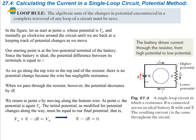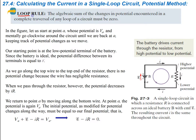Here's one of our loop rules — the potential method. The first one is: the algebraic sum of the changes in potential encountered in a complete traversal of any loop of a circuit must equal zero. If you go around an entire circuit and add up all the positive potentials and the negative potentials, it all needs to add up to zero.